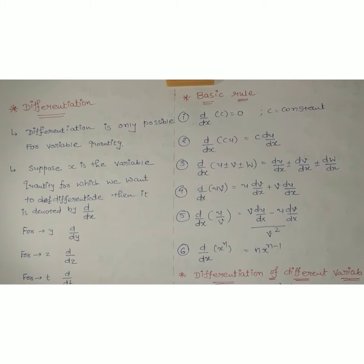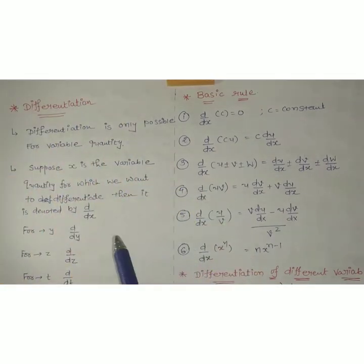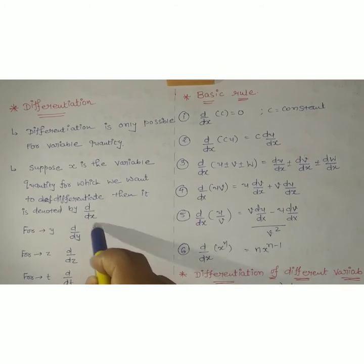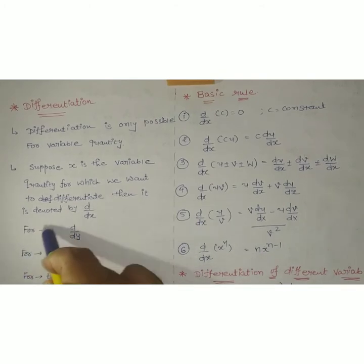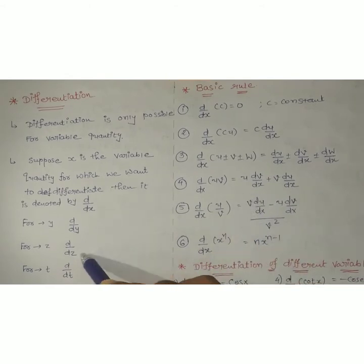Suppose x is the variable quantity for which we want to differentiate. It is denoted by d by dx. So if we see d by dx, that means differentiation for the quantity x. If you have quantity y, then d by dy; for z, d by dz; and for t, d by dt. In this way, differentiation can be done for different variables.